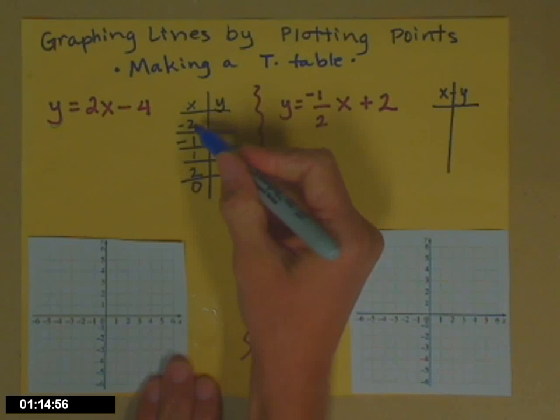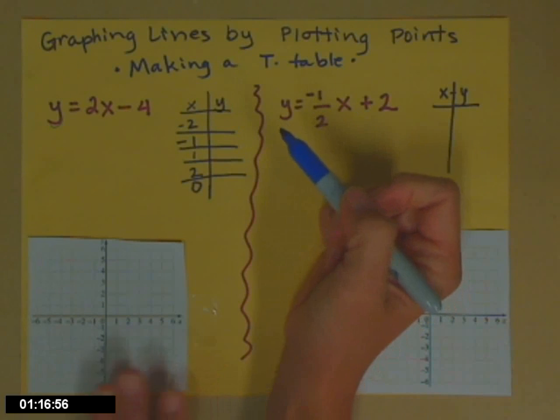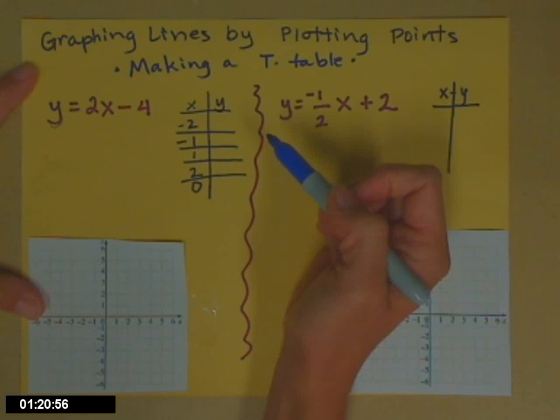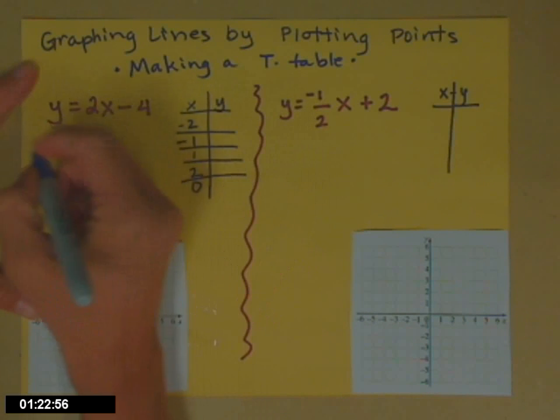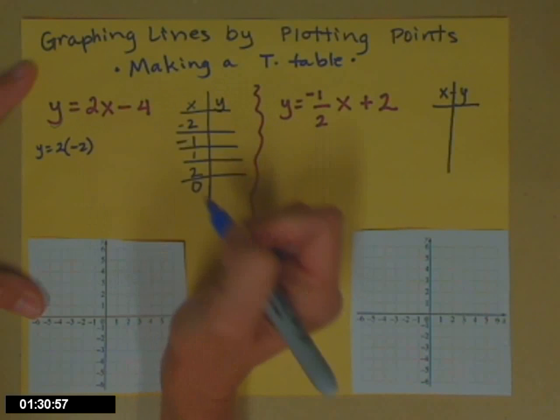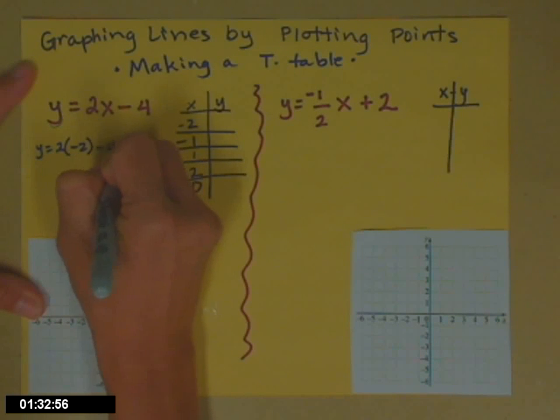So let's see. When we have x equals negative 2, we plug that into the equation, and then the equation tells us what the y partner has to be. So if x is negative 2, so here's our little workspace, y is 2, that's there, times negative 2, the value we're plugging in for x, minus 4.